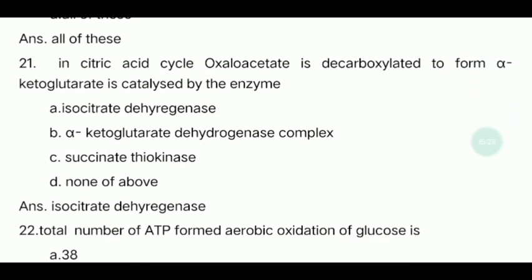Twenty-first question: In the citric acid cycle, isocitrate is decarboxylated to form alpha-ketoglutarate. This reaction is catalyzed by which enzyme? The answer is isocitrate dehydrogenase.